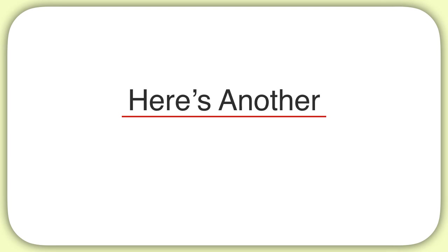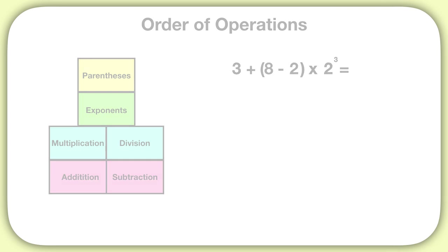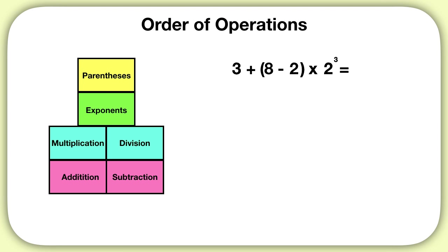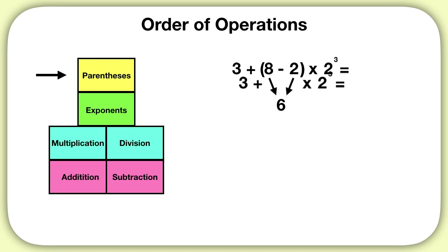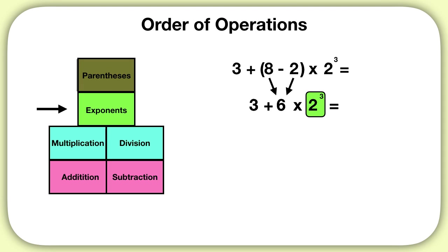Here's another problem to practice with. Let's solve this equation using the order of operations. What should I solve first? First I check for parentheses, and I see them right here. Eight minus two is six. Then I can bring down my equation. There are no more parentheses, but I can see there is an exponent. I will solve two to the power of three, which is eight. Then I can bring down the rest of my equation.